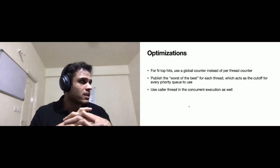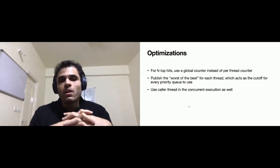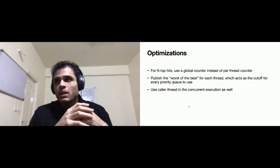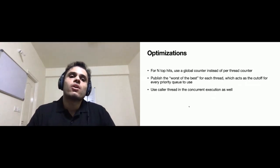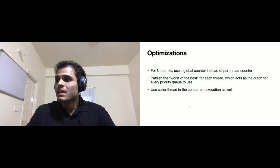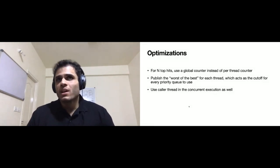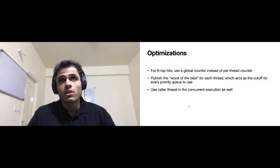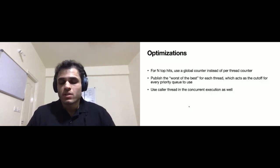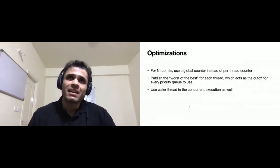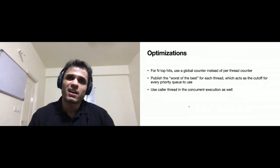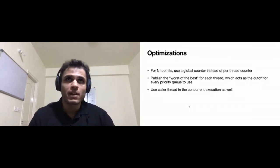Another optimization was using the caller thread to execute one of the slices as well. Some optimizations also explored using a shared priority queue, but using a shared priority queue has its own concurrency costs. There have been optimizations done recently in that area, and more to be explored, just to make sure that the cost of these N×M collections is reduced. If we can reduce the number of documents actually being looked at in a concurrent search — reduce that footprint — that will greatly increase the scope of applicability of concurrent search.